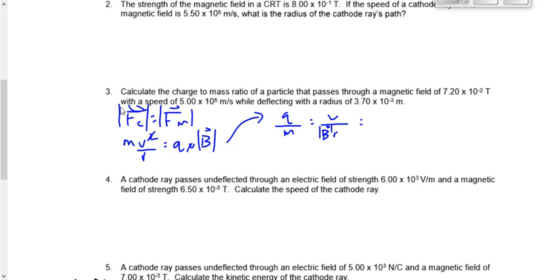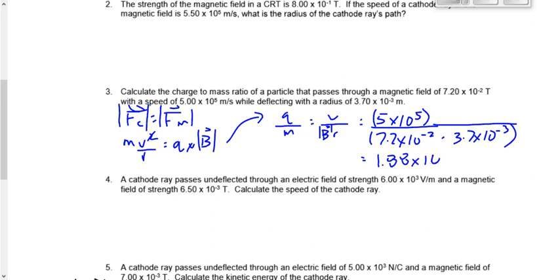v is 5 times 10 to the 5. Be prepared for that situation where you need to find v from the velocity selection chamber and then sub it into here. Here we're given v, but you could absolutely be asked to solve for v and then sub it into this equation. All right, b is 7.2 times 10 to the negative 2 times 3.7 times 10 to the negative 3. And when we get that, we get 1.88 times 10 to the 9, and it would be coulombs per kilogram.